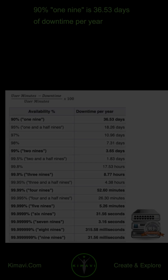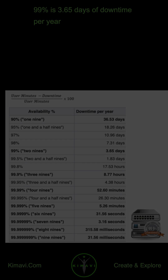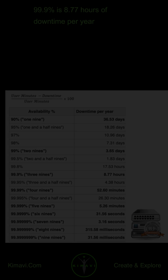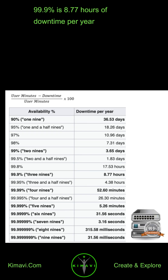90% availability means 36.53 days of downtime per year. 99% availability means 3.65 days of downtime per year. 99.9% availability means 8.77 hours of downtime per year.